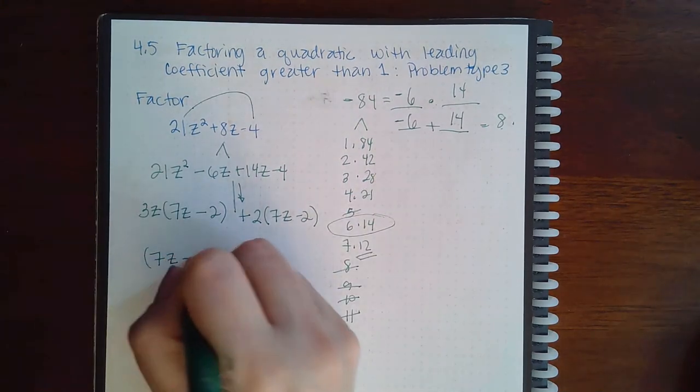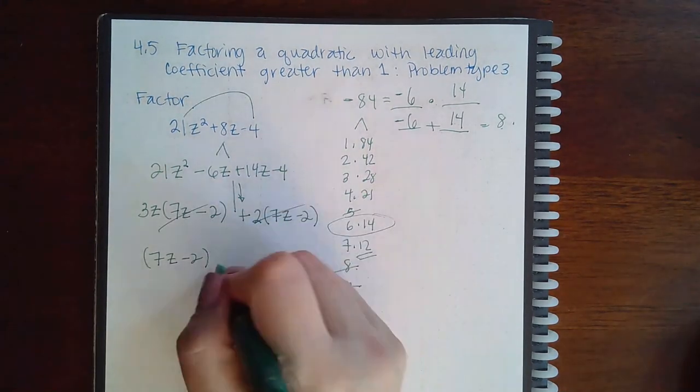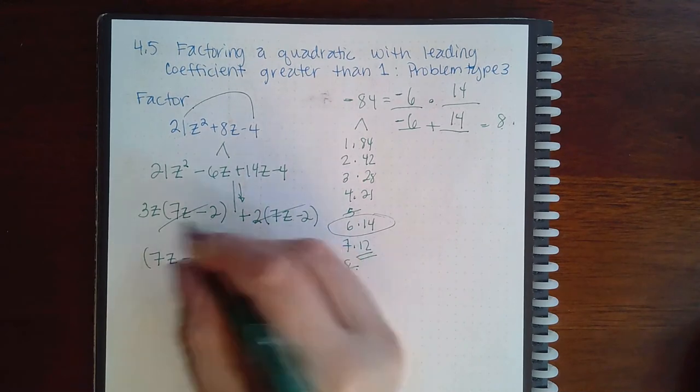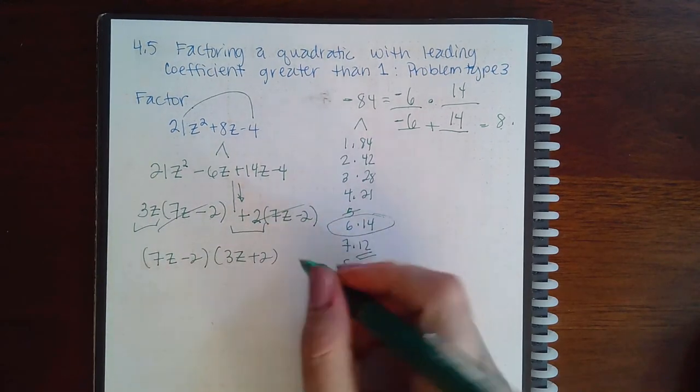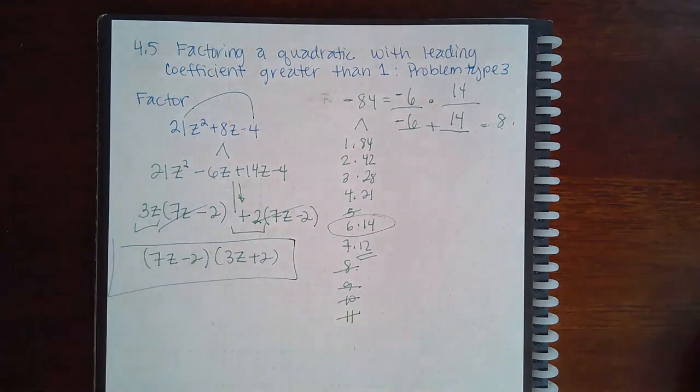They have a 7z minus 2 in common. And if I take that out, I'm left with 3z plus 2, just whatever was on the outsides. And that is the factorization.